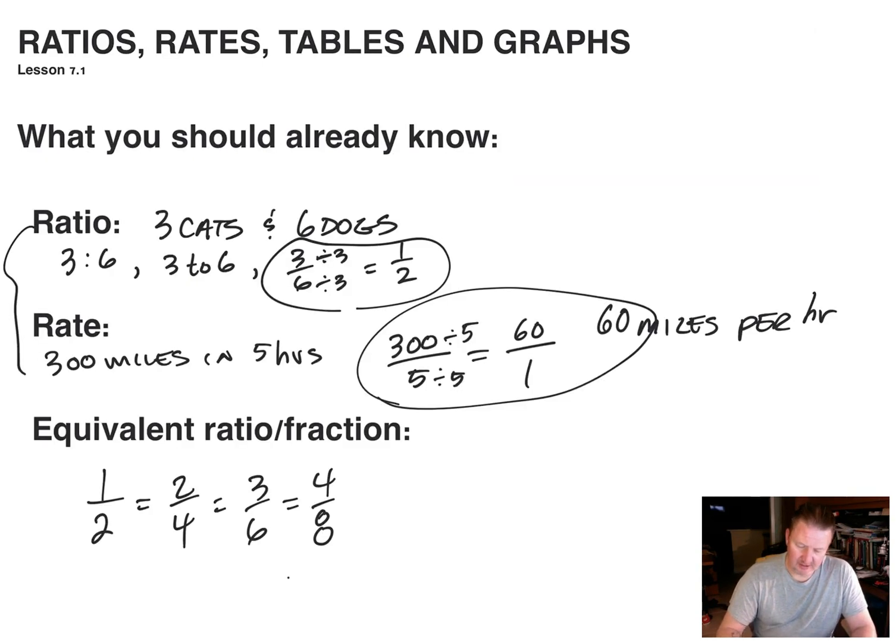Let me go back here for a second. And all I'm doing is taking this one half and I'm multiplying it by the same number. All right. One half times two over two gives me two fourths. All right. One half times three gives me three over six. See what I'm saying? So that's all I'm doing there.